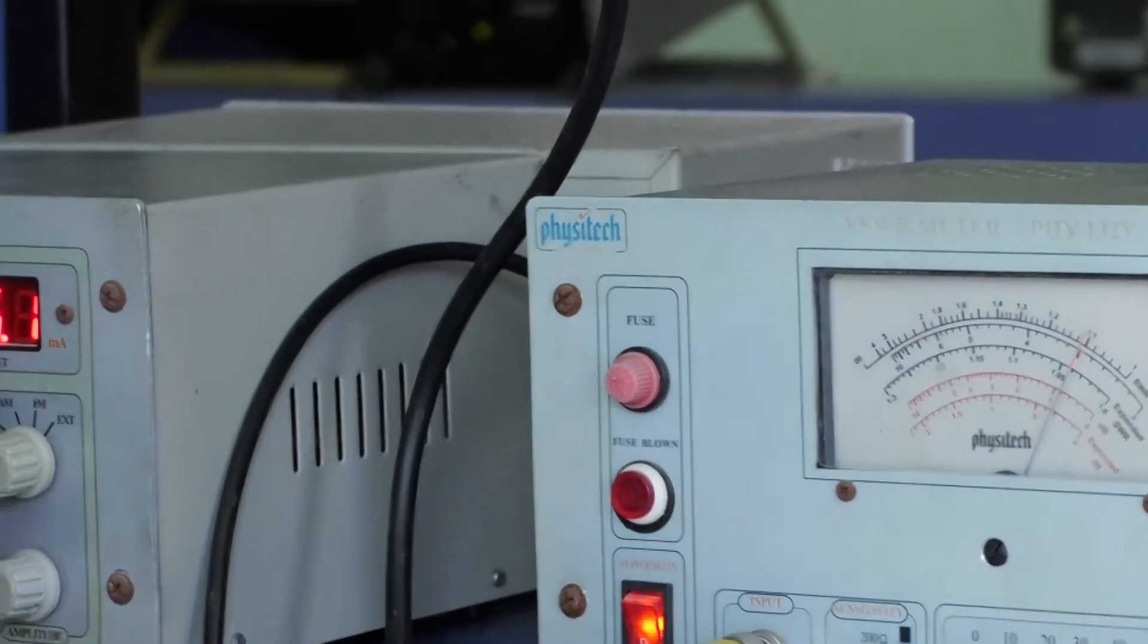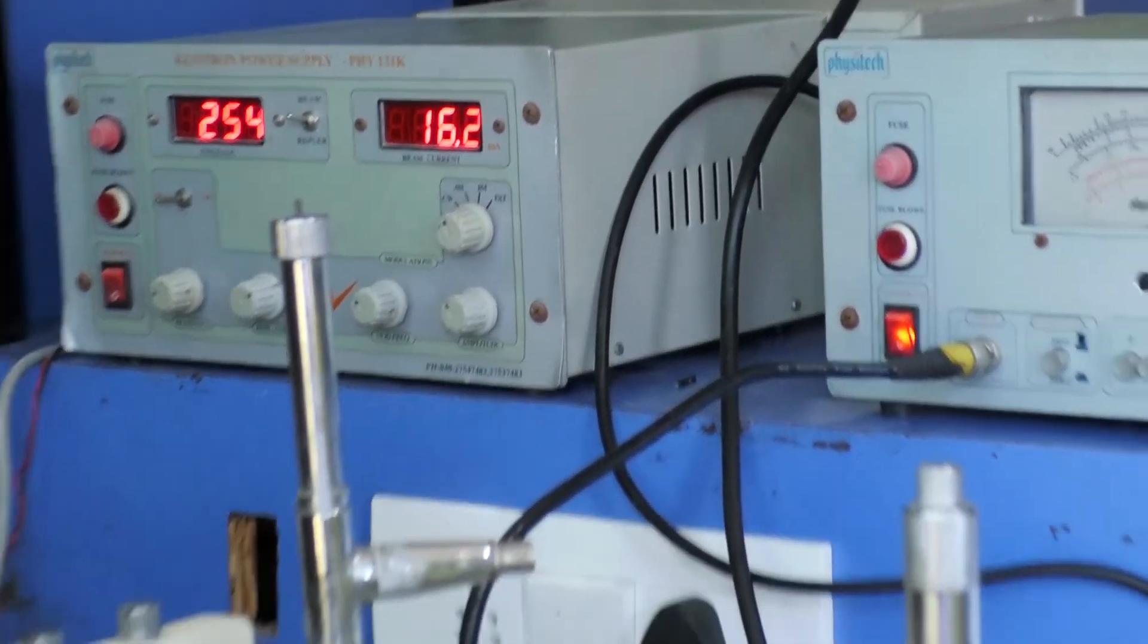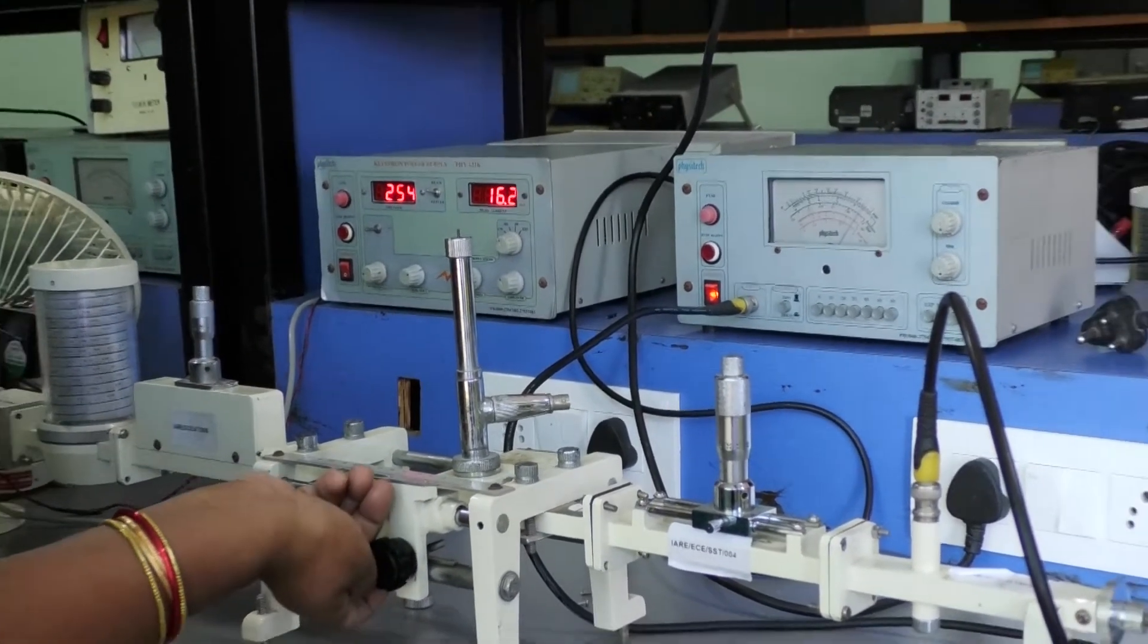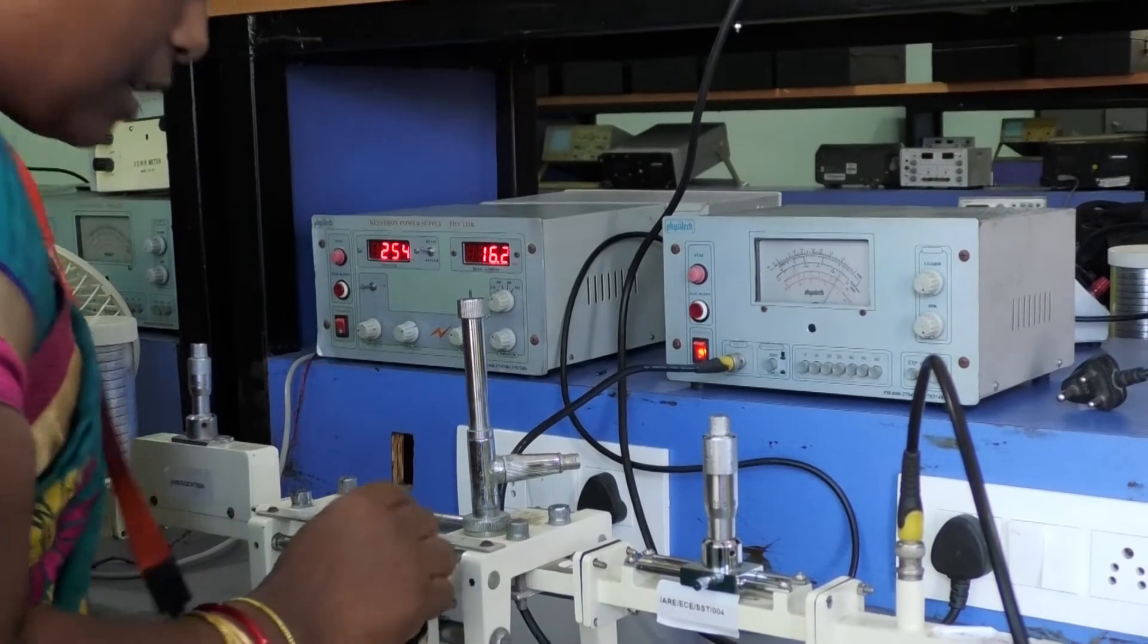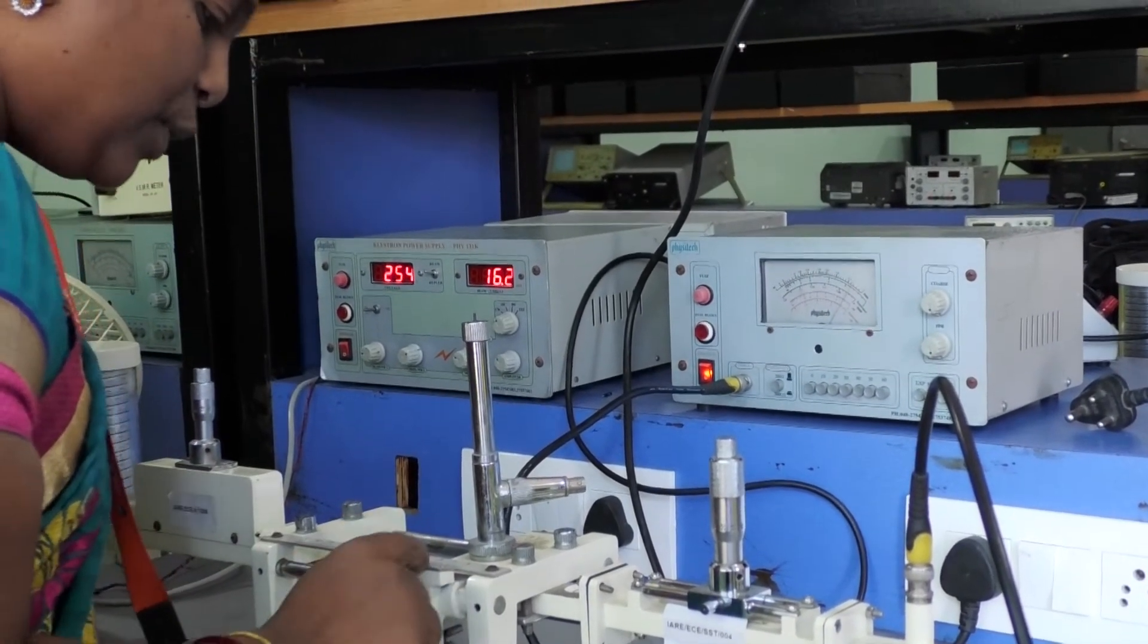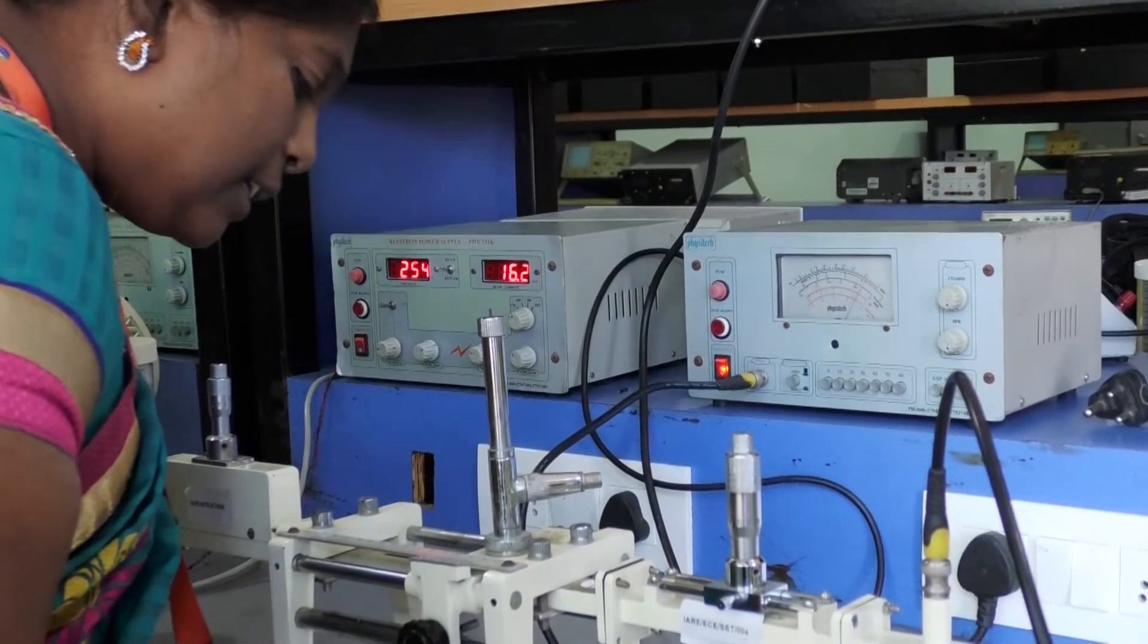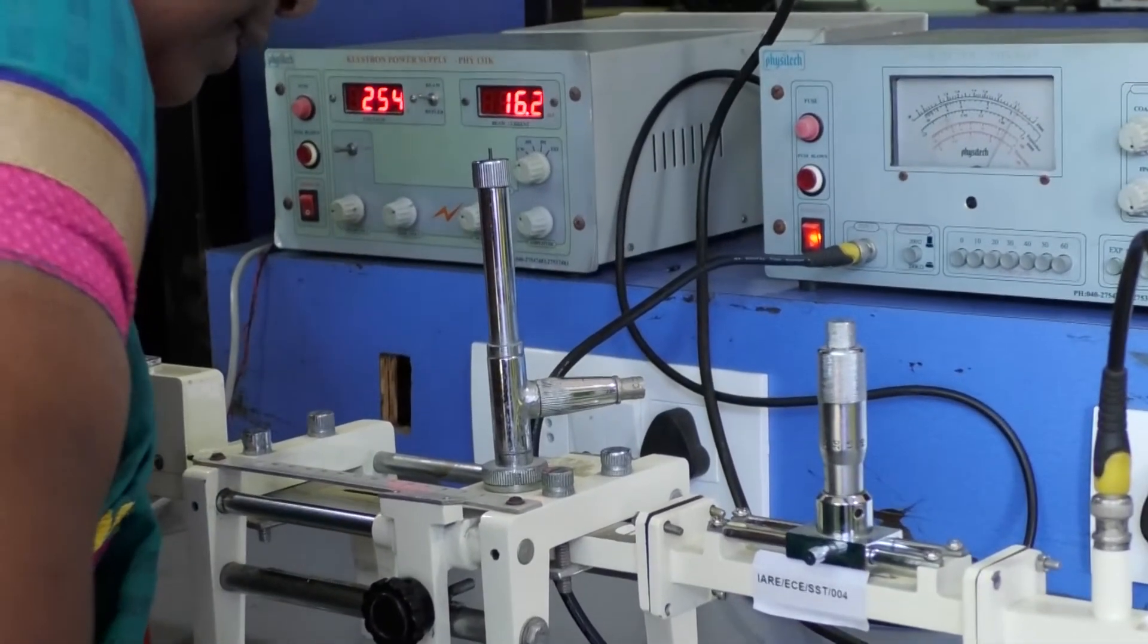Now move the probe along the slotted line in right side direction. Now we observe the dip. Here we also measure D2. The D2 is where the vernier scale coincides with the normal scale. The D2 value is 7.7.